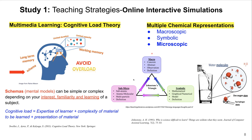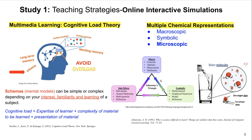Another guiding theory is Johnstone's Triangle, a well-known framework published in 1991 explaining why science is difficult to learn. He pointed out that many science topics are not tangible — especially at the microscopic level. In chemistry, we focus on atoms, molecules, structures, and shapes that students cannot see with their eyes. We also have symbolic language like H₂O. The difficult part is helping students connect different representations: the macroscopic level they see in everyday life, the microscopic molecular level, and the symbolic level of chemical formulas and equations.